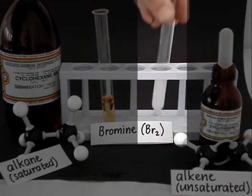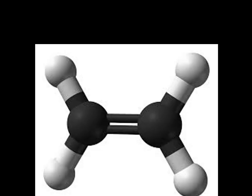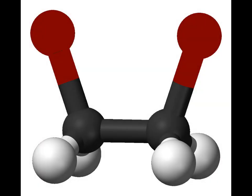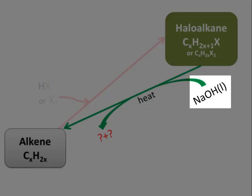This happens so easily because the alkene is unsaturated, so its double bonds can easily break to incorporate the halogen. The reverse reaction, however, will not happen spontaneously — we need to heat it and use a compound to help: concentrated sodium hydroxide.